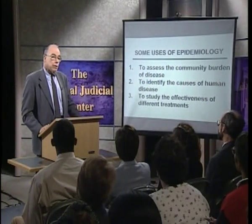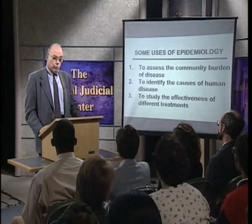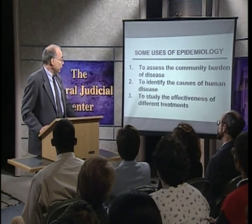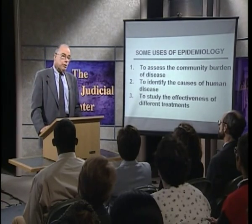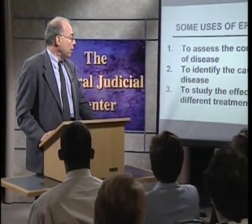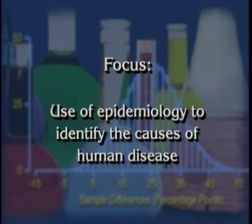Turning to how epidemiology is used, there are many uses, of which three are shown here. First, epidemiology helps us to assess the magnitude of the community burden of disease. Second, epidemiology helps us to identify the cause of human disease, a critical factor if we are going to be able to prevent disease. And finally, epidemiology is used to study the effectiveness of different types of treatments. In this presentation, I am going to focus on the second use — to identify the causes of human disease — because this is the use that is most prominent in toxic tort cases.